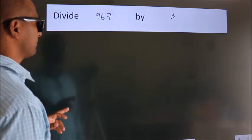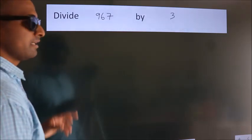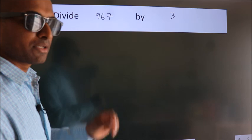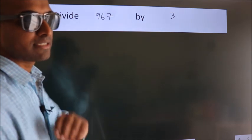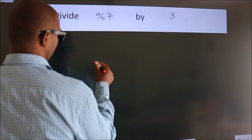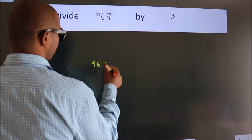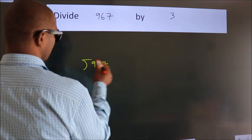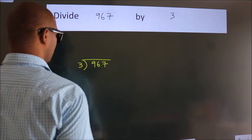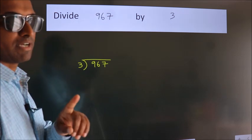Divide 967 by 3. To do this division, we should frame it in this way. 967 here, 3 here. This is your step 1.